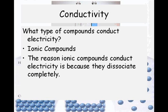Ionic compounds can conduct electricity, and the reason is because they dissociate completely. The plus charge element and the minus charge element completely come apart, which means they're freely moving, and electricity can be conducted through that solution.